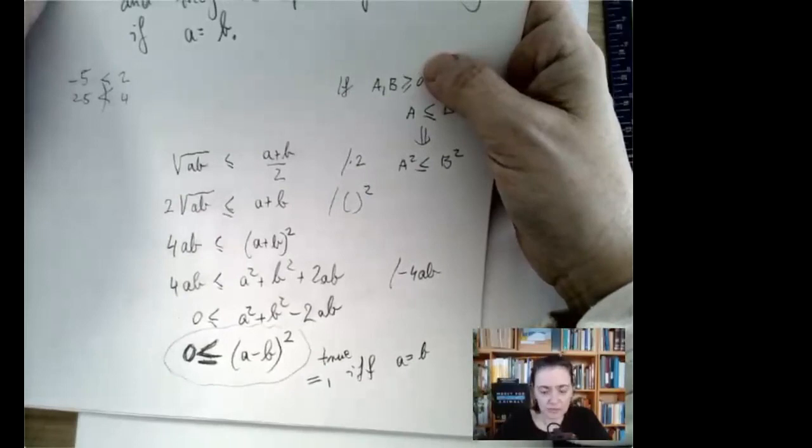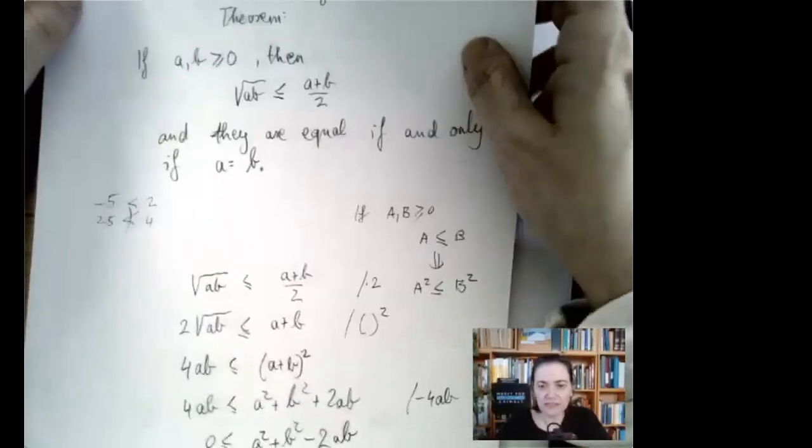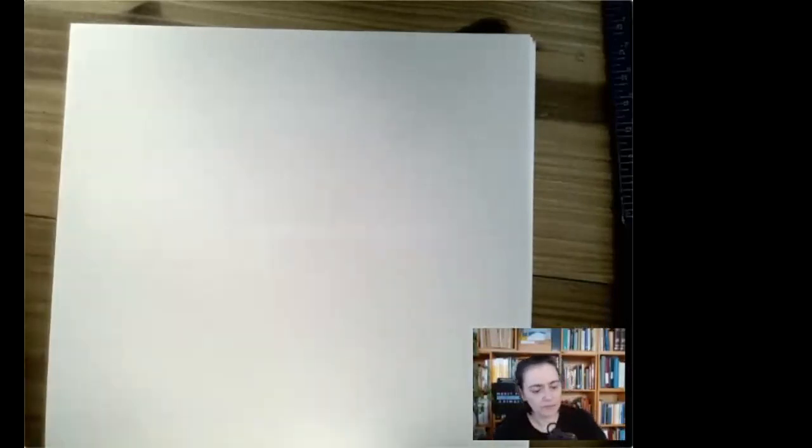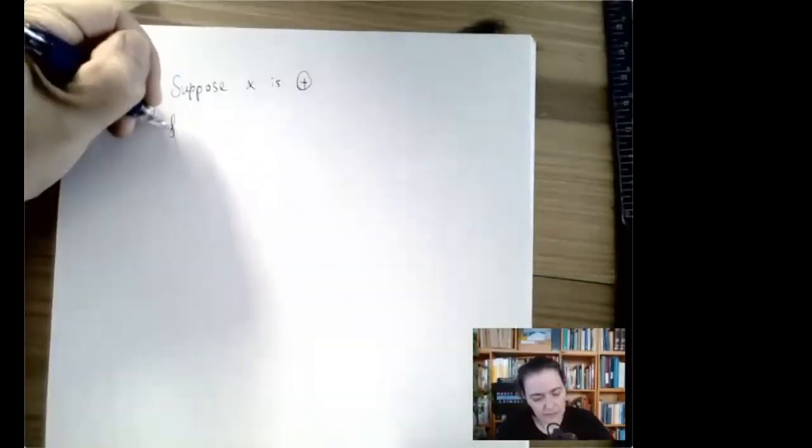These statements can be generalized for three numbers, four numbers, and so on. This is actually quite useful — for example, in calculus you'll learn something called optimization, where instead of finding when a quantity equals a specific value, you're asked to find the maximum or minimum of an expression. The Arithmetic-Geometric Mean inequality is a very powerful tool for that.